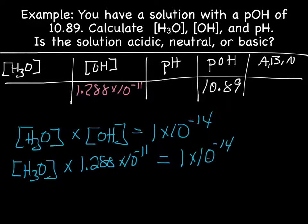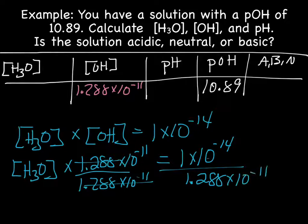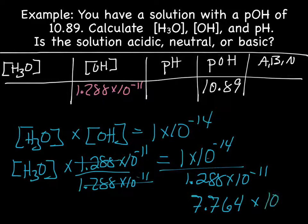So now to solve for H3O, we're going to divide both sides by 1.288 times 10 to the negative 11th. And that gives us a concentration of H3O of 7.764, four sig figs, times 10 to the negative 4. So 7.764 times 10 to the negative 4.